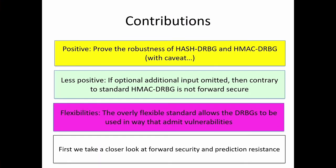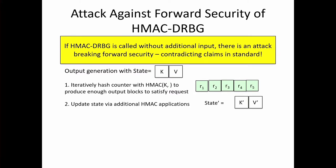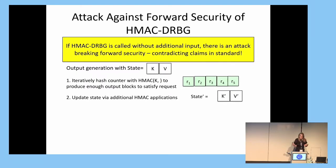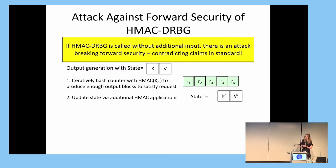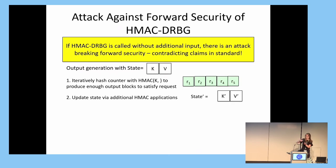First, we take a closer look at forward security and prediction resistance, beginning with this somewhat surprising result about HMAC-DRBG. The standard allows for optional strings of additional input to be included in output generation requests. It turns out that if HMAC-DRBG is called without these optional inputs, then it's not actually forward secure, which directly contradicts claims in the standard. To see where the problem creeps in, we need to look at how output generation works. The state consists of a key k and a counter v, and to satisfy an output generation request, the generator iteratively hashes this counter using HMAC multiple times, producing an output block in each iteration.